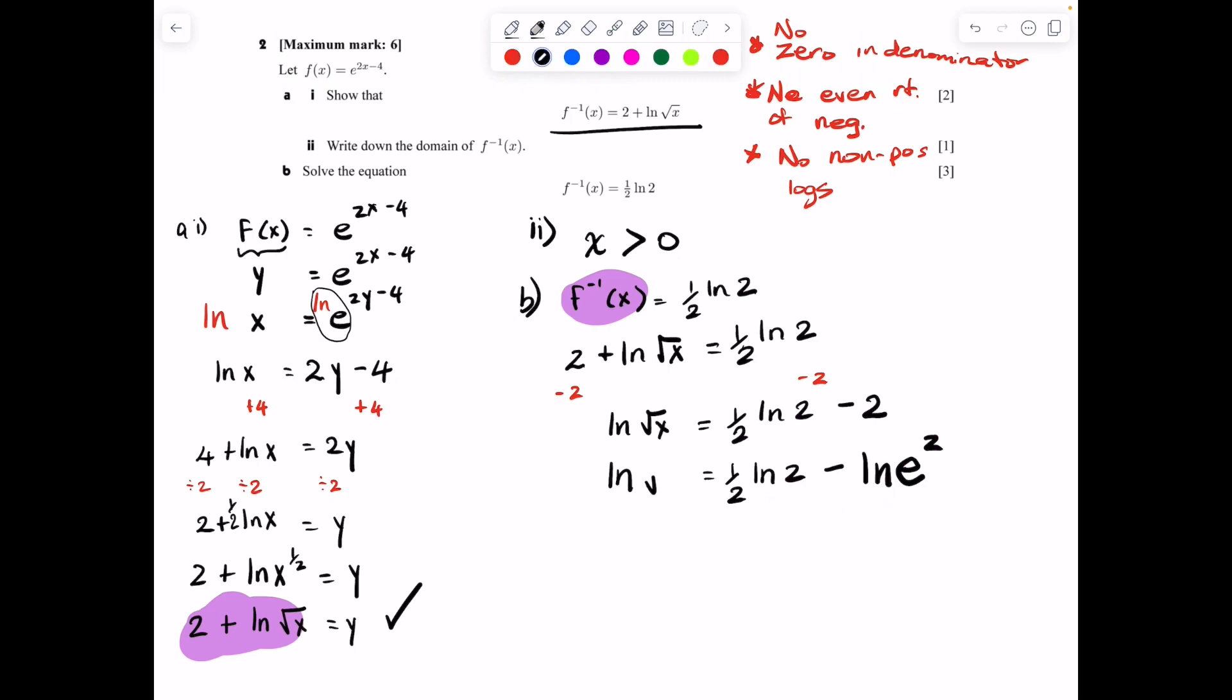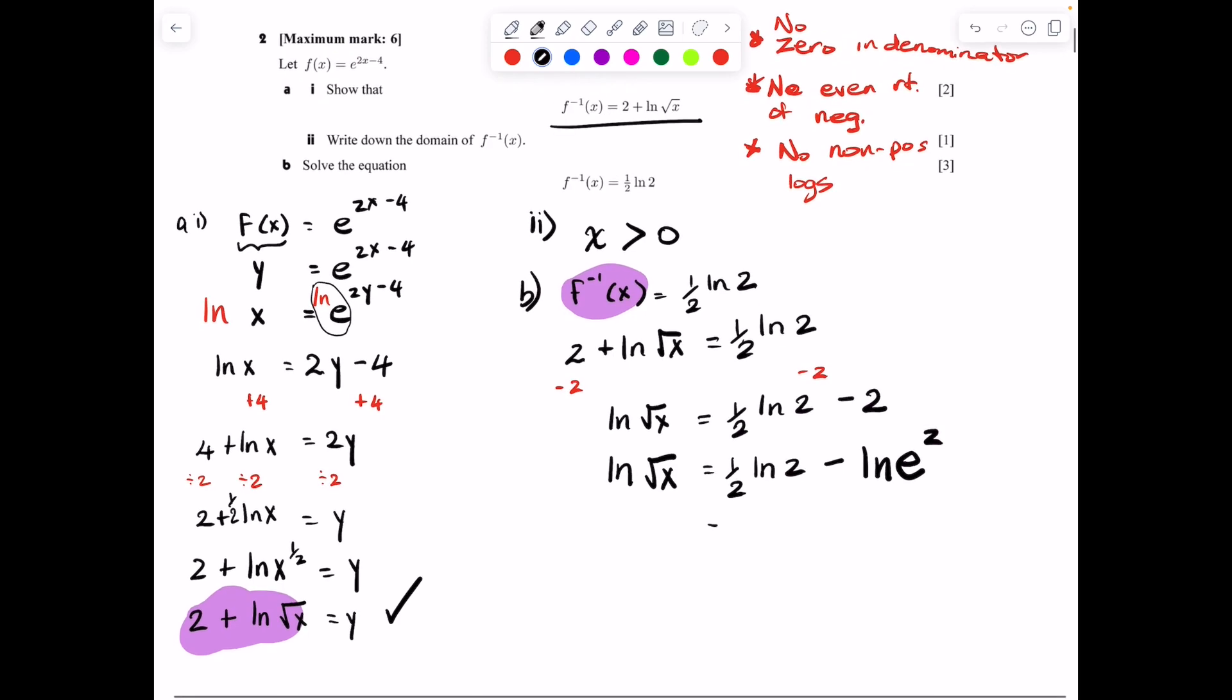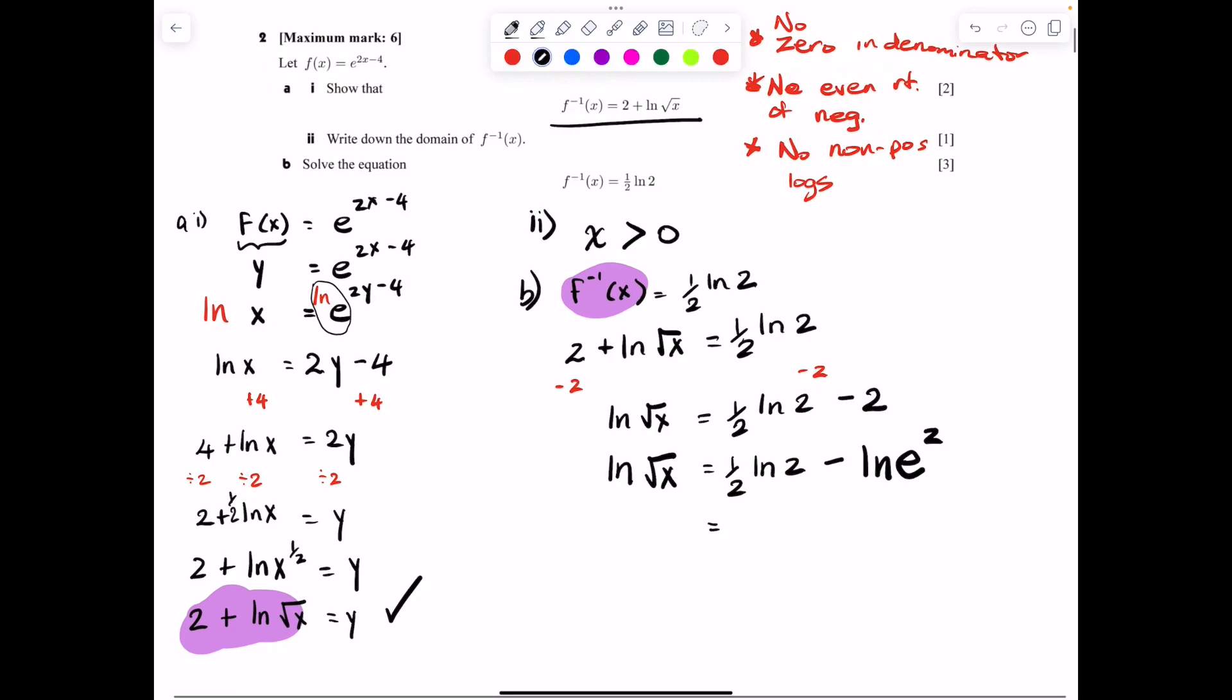On the left side, I'm just going to rewrite. And on the right side, we have that expression. So now the whole goal is to put those two things together on the right. Here we have a half. I can take that and move that up here using the law of logs. So we get ln(2^(1/2)) - ln(e^2). And that is equal to ln√x.